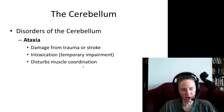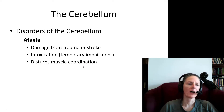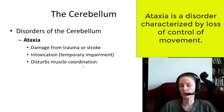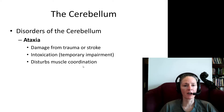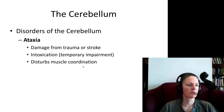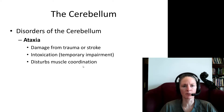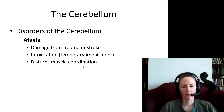What happens if there is damage to the cerebellum? People will have movement disorders often called ataxia — a lack or disruption in movement. This can happen for a variety of reasons: permanent damage, or from drug abuse or alcohol intoxication. You may see people who are not very coordinated, staggering or stumbling — this results from disruption of cerebellar function.